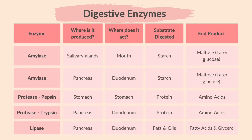This table summarizes where in the digestive system amylase, protease, and lipase are secreted and where they act. Amylase is produced by the salivary glands as well as the pancreas, and is released into the mouth and duodenum respectively. Amylase breaks down starch to maltose, which is later broken down into glucose.